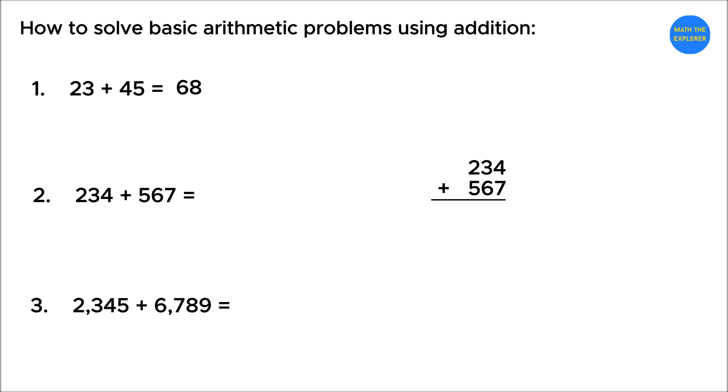To solve 234 plus 567, line up the numbers by place value: hundreds, tens, and ones. Start with the ones place. 4 plus 7 is equal to 11, so write 1 and carry over 1 to the tens place.